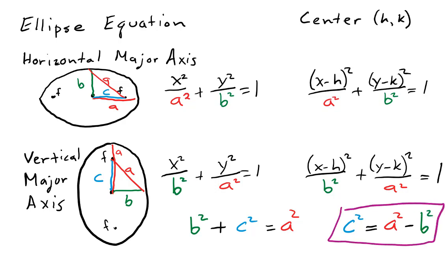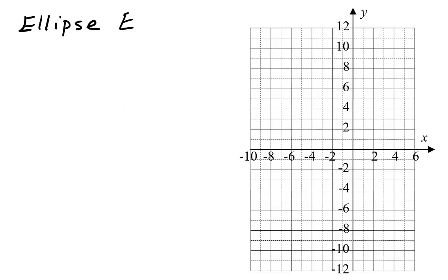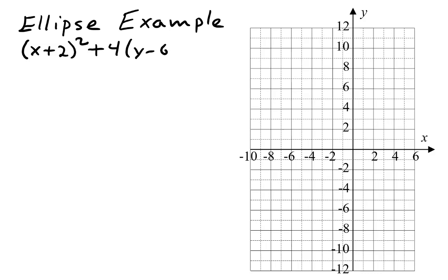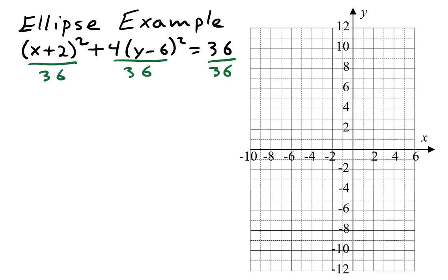To graph an ellipse, we need to use algebra to put our equation into standard form. Our first ellipse example has X plus 2, the quantity squared, plus 4 times Y minus 6, the quantity squared, equals 36. This is almost in standard form, but on the far side of the equal sign we have 36. We divide through by 36, and where we have a fraction that can be reduced we do so: 4 over 36 is 1 over 9. So we get X plus 2 quantity squared over 36, plus Y minus 6 quantity squared over 9, equals 1.